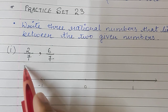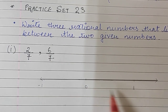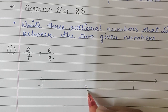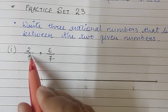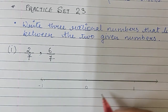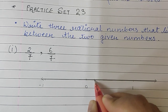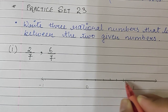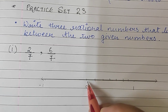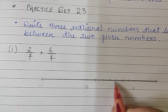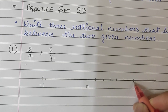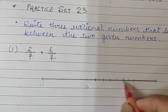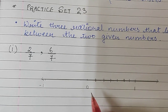The denominator says 7. So on my number line with 0, 1, 2, 3 and minus 1 on this side, I am going to divide the space from 0 to 1 into 7 parts — making 1, 2, 3, 4, 5, 6, 7 parts. So total there are 7 parts, and I have divided the number line from 0 to 1 into 7 equal parts.